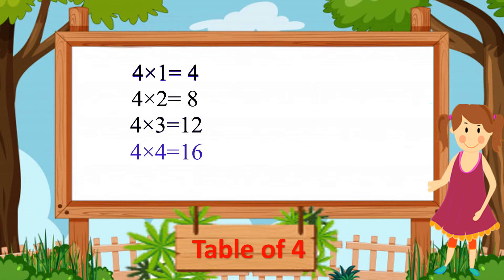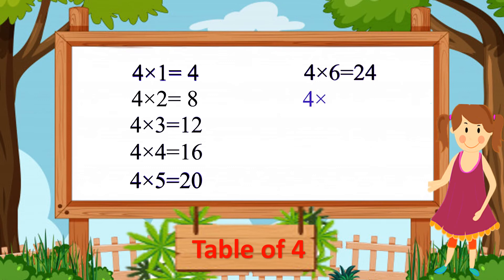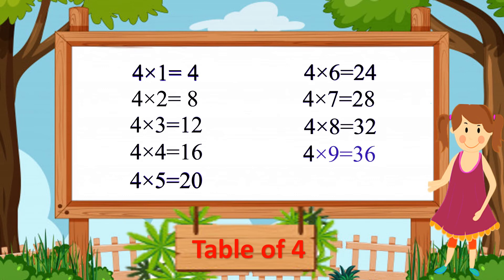How did we forget! Four fours are sixteen. Four fours are sixteen. Four fives are twenty. Four fives are twenty. Four sixes are twenty-four. Four sixes are twenty-four. Four sevens are twenty-eight. Four sevens are twenty-eight. Four eights are thirty-two. Four eights are thirty-two. Four nines are thirty-six. Four nines are thirty-six. And four tens are forty. Four tens are forty.